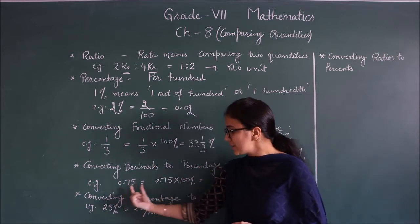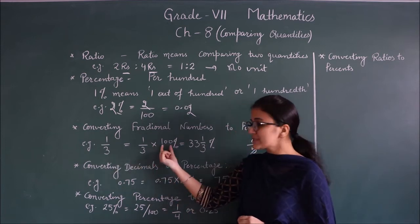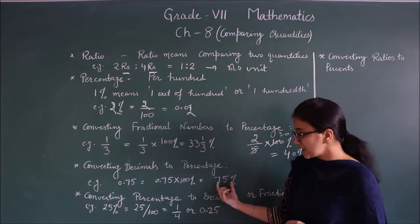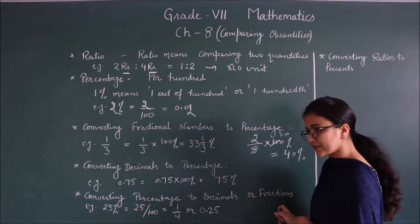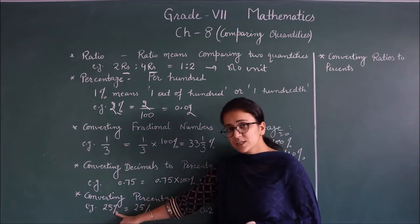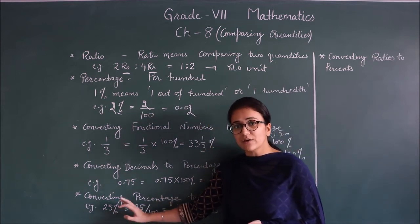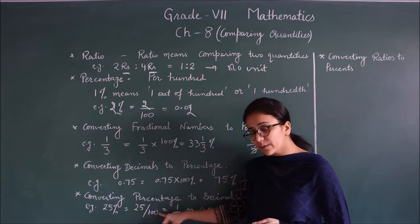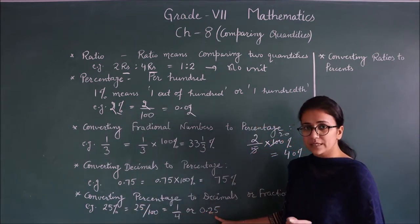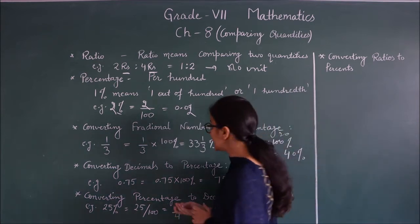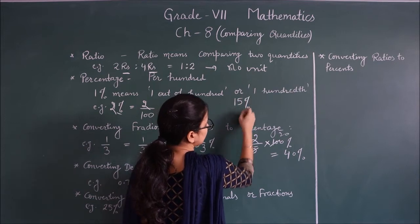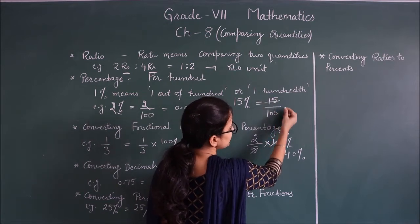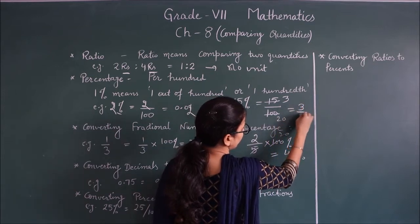Similarly, to convert decimals to percentage, multiply by 100%, same as for fractions. You get 75%. Next, converting percentage to decimals or fractions: remove the percent sign and write upon 100. For example, 25% = 25/100 = 1/4 = 0.25. For 15% = 15/100 = 3/20.